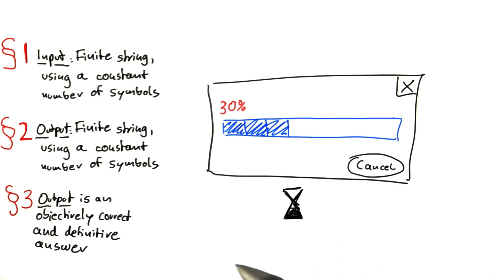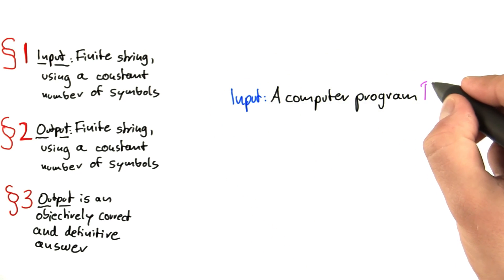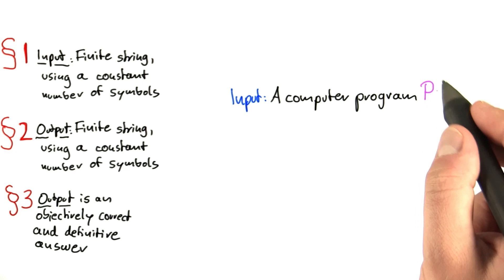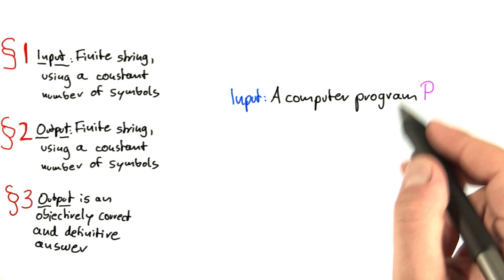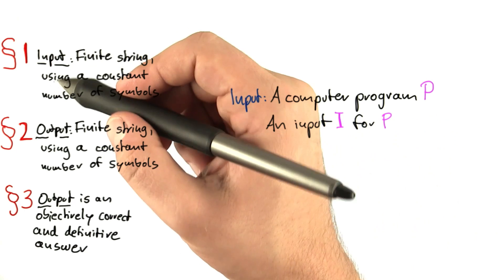So, what if we had an algorithm for that? What if we had an algorithm that took as input a computer program P? It could be written in any language, basically. So, Python, C++, Java, whatnot. And, of course, we also want an input for that program.